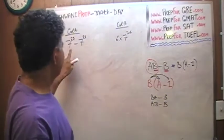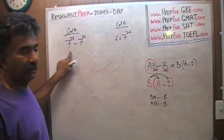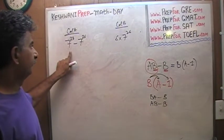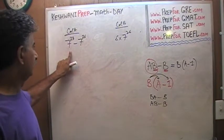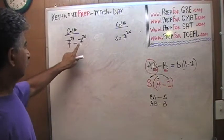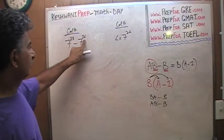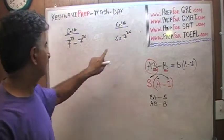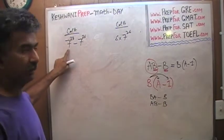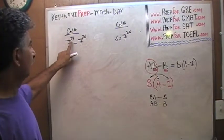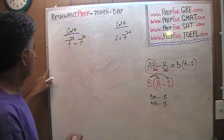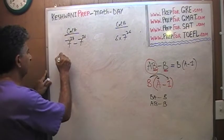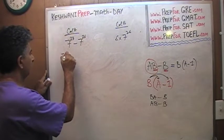So where do we apply this concept? Where is our A and where is our B? I see 7 raised to 26 in both terms. Can we somehow convert 7 raised to 27 into something with 7 raised to 26? The answer is yes — let's write 7 raised to 27 as 7 times 7 raised to 26.